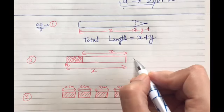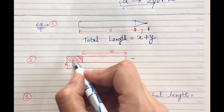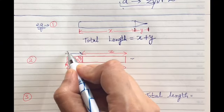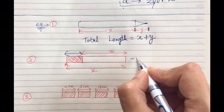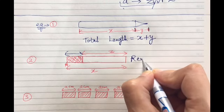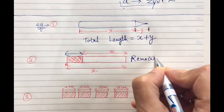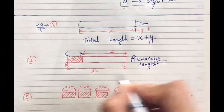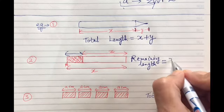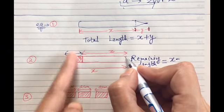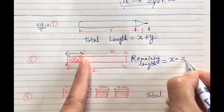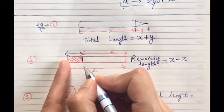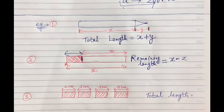Now in this what is given to us - total length is given, and we have to find out the length of this portion. So remaining length is equal to - now total is X, if we have subtracted this much, then that will be the value, so it will be X minus Z.